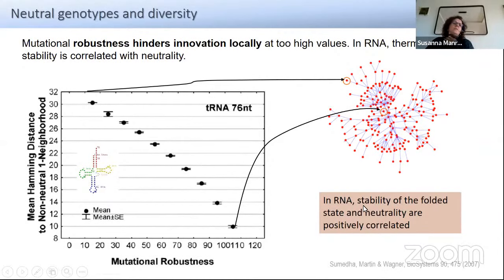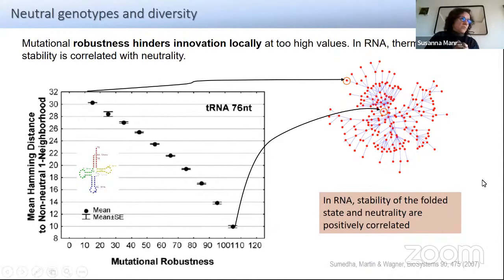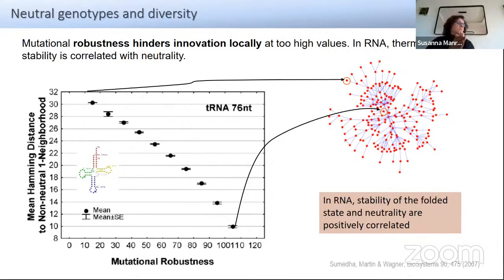In RNA, the stability of the folded state and neutrality are positively correlated. For example: if you have many GC pairs, which lower the energy of the folded state substantially and convey high stability, then if you change a C by a U it can still form a pair, not as stable but still accepted because the rest of the structure provides stability. So you can accept more mutations the more stable you are. There is a positive correlation between stability and the number of mutations you can accept — between stability and neutrality of the folded state.